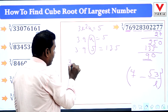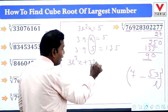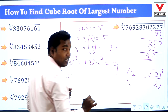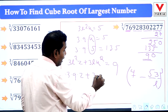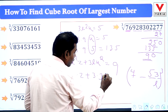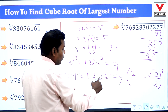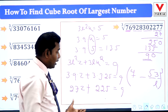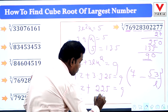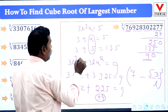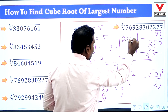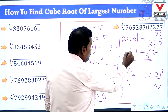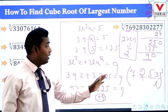Now we apply another formula: 3L²Z + 3LK² = 9. Here L = 3, K = 5: so 3 × 9 × Z + 3 × 3 × 25 = 9. That gives 27Z + 225 = 9. The unit digit of 225 is 5, and 5 + 4 = 9, so 27Z = 4. Since 27 × 2 gives unit digit 4, Z = 2. The cube root is 4253.